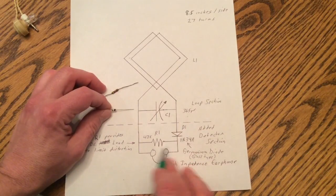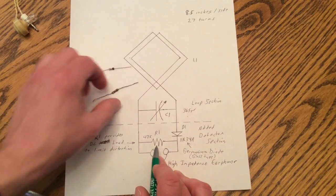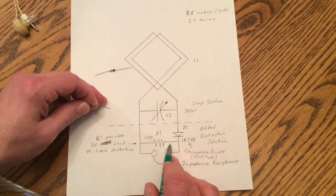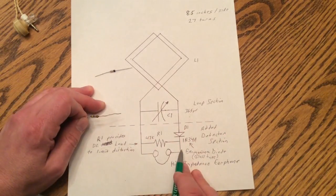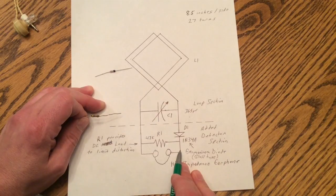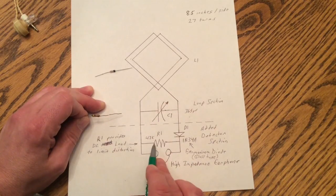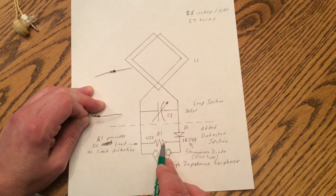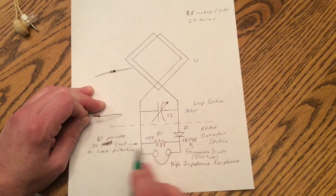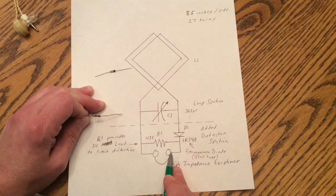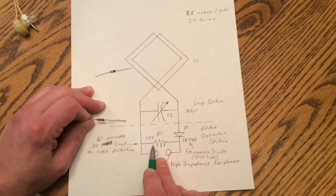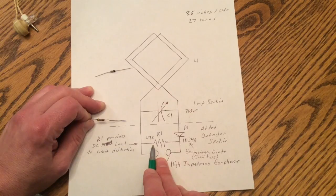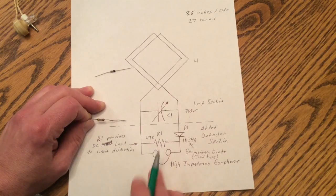And I added a 47k ohm resistor here. This may not be necessary for you. But in my case, I do live very close to the station, about a mile from the tower. And by putting a resistor here, it does put a DC load on the circuit to eliminate distortion. So anything between a 33k and a 100k ohm resistor would be fine here.